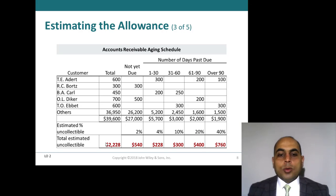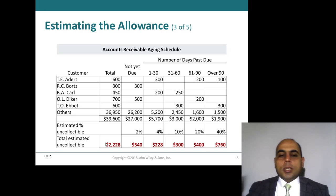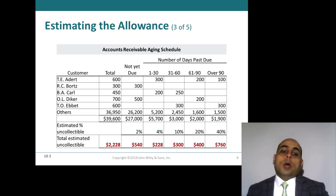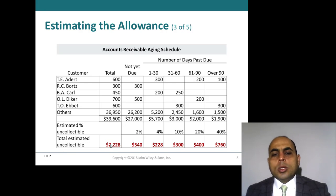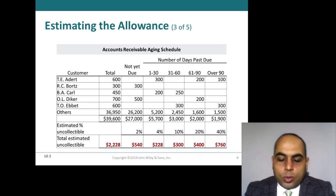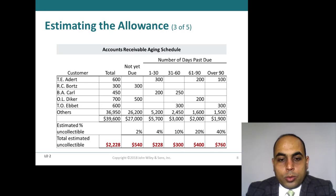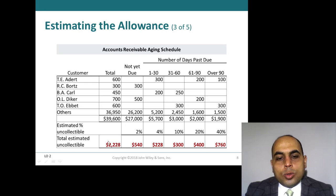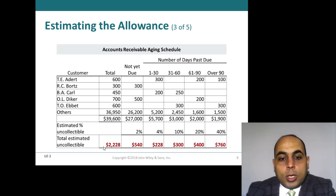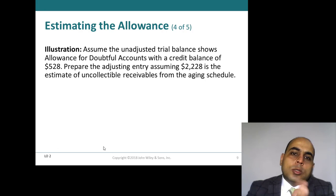You can calculate the estimate as a percentage of outstanding receivables. As I mentioned, it will be determined according to the experience of the company. The accountant or financial manager has to make that decision. Now we have a total doubtful amount of $2,228. Let's see the accounting treatment for this amount with a numerical example.